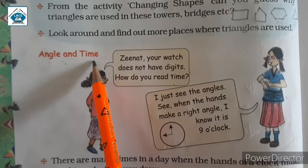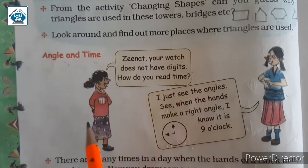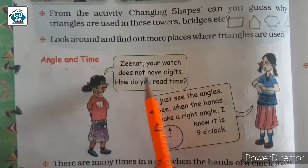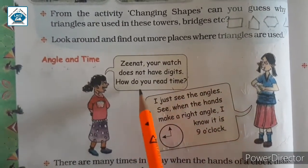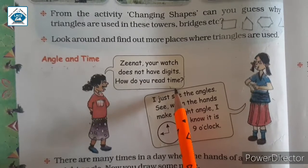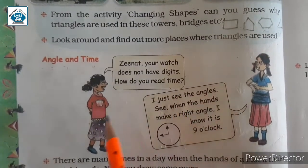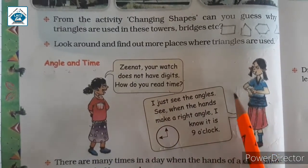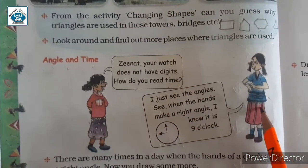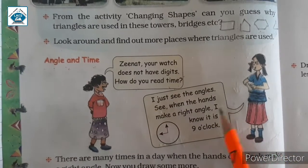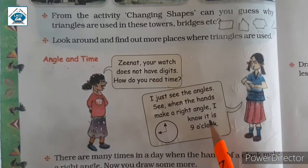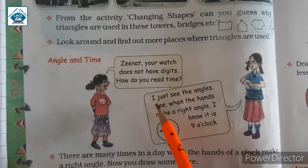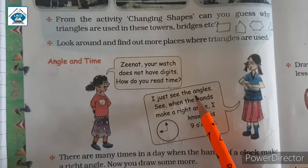Now, angle and time. Here, a girl is asking Jeenat: your watch does not have digits - how do you read time? Jeenat has a watch that does not have any digits. Her watch has no numbers. For that, the girl is asking how do you know the time? So Jeenat is replying: I just see the angles.